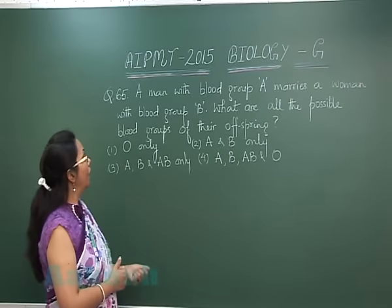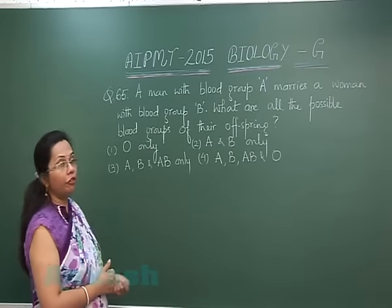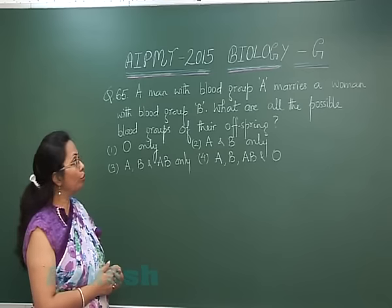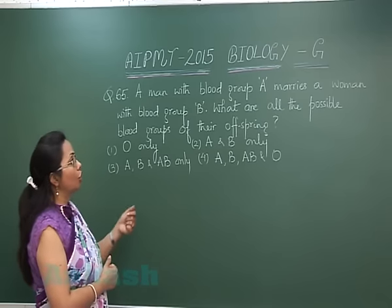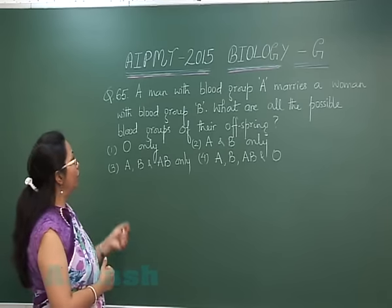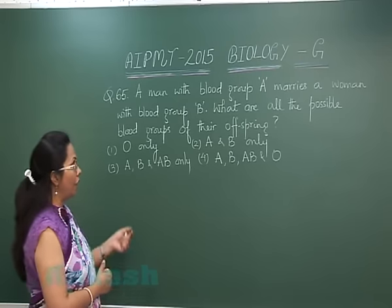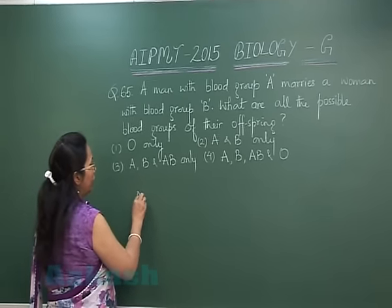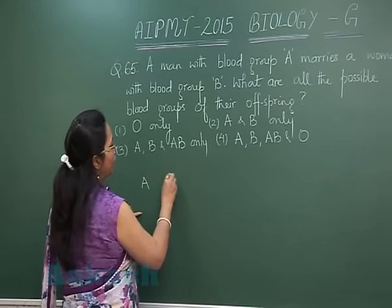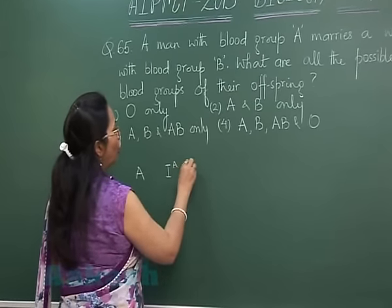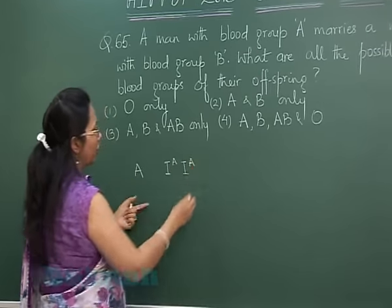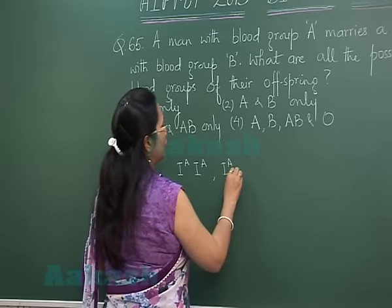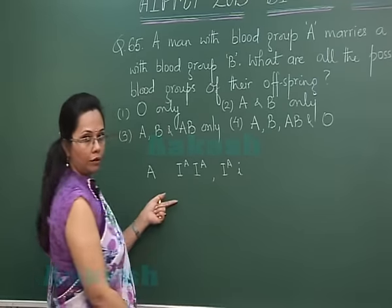Question 65: A man with blood group A marries a woman with blood group B. What are all the possible blood groups of their offspring? In blood group A, the genotype can be either homozygous or heterozygous.